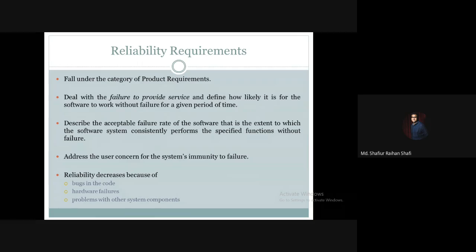Reliability requirements basically deal with failure to provide service in this context. It also describes the acceptable failure rate of the software, that is the extent to which the software system consistently performs the specified functions without failure. A system may fail at some time to accomplish a particular task, so reliability requirements describe the system's acceptable failure rate.